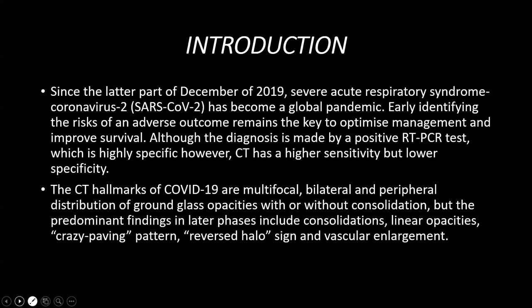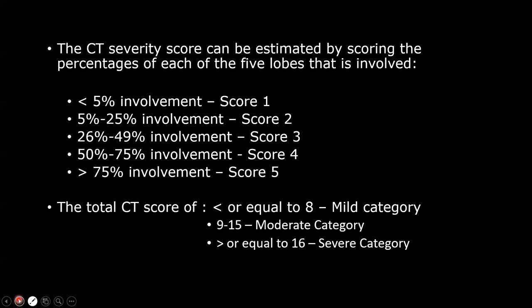The hallmark of COVID-19 imaging includes multifocal, bilateral and peripheral distribution of ground glass opacities with or without consolidation. The predominant findings in the later phase include consolidation, linear opacities, crazy paving pattern, reverse halo sign, and vascular enlargement. The CT severity score can be estimated by scoring the percentage of each of the five lobes that is involved.